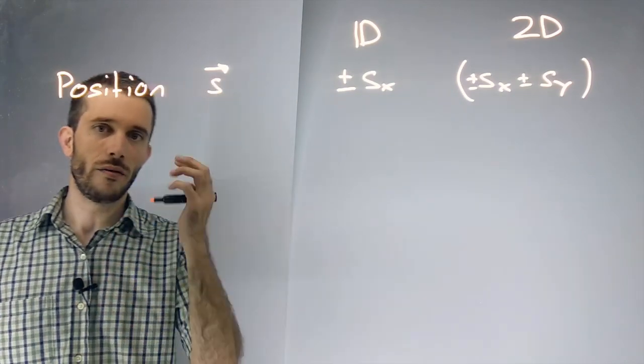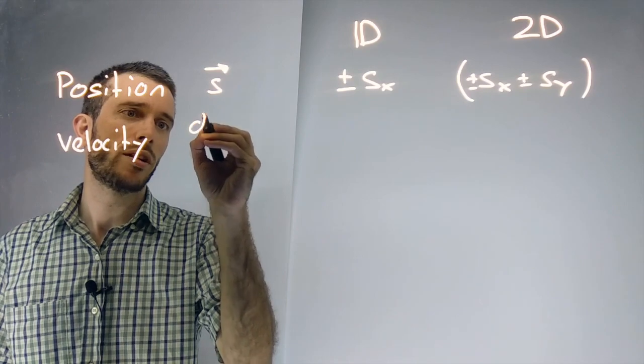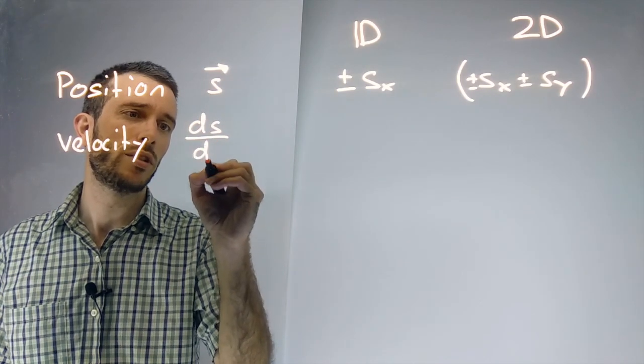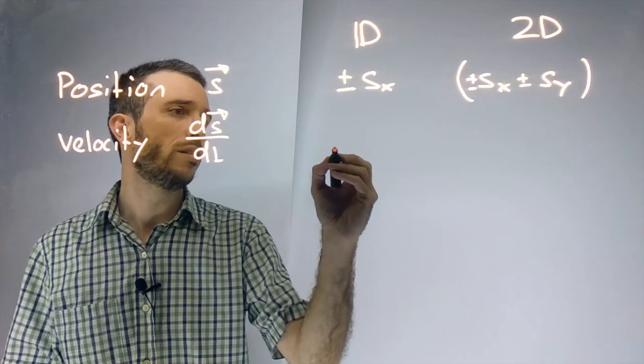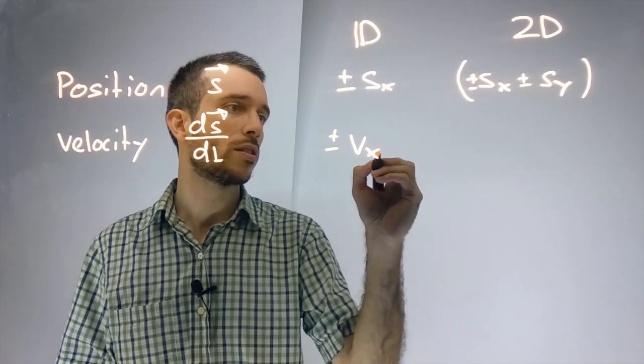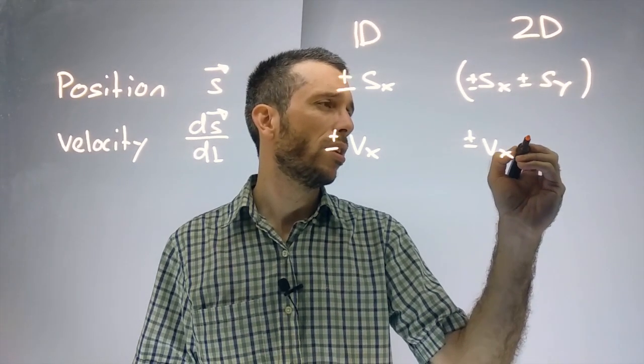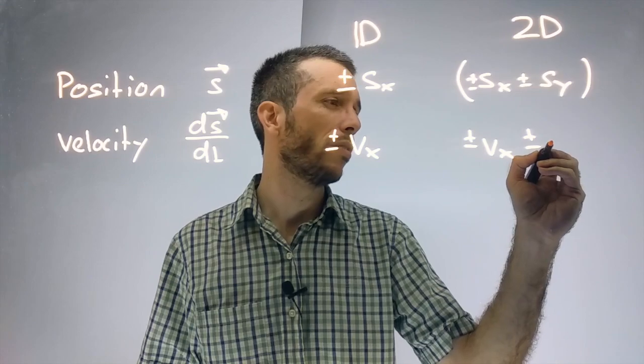Next, we have velocity, which is simply the derivative dS over dt. In 1D, this meant it was plus or minus a velocity in x. Now we have plus or minus a velocity in x and plus or minus a velocity in y.